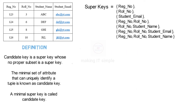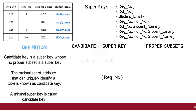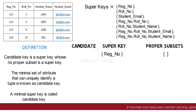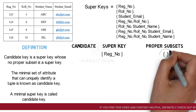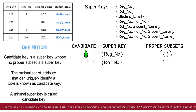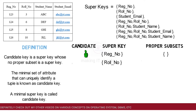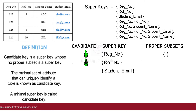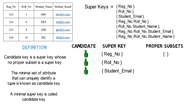Let us examine all super keys one by one. First is registration number — as there is just one element in this set, a null set will be its proper subset. Since the null set is not a super key in this student table, registration number is a candidate key. Second, role number — again a single element, so its proper subset is a null set. Since the null set is not a super key, role number is a candidate key. Third, student email — again a null set as proper subset, so email is a candidate key.